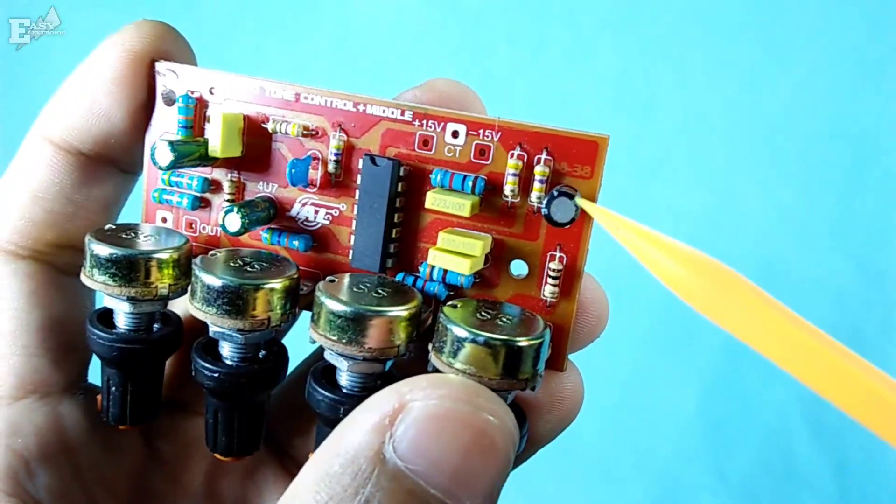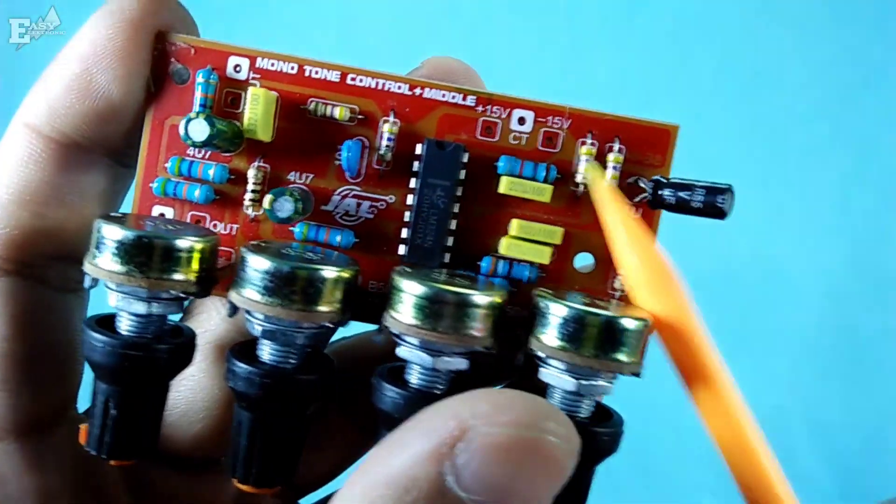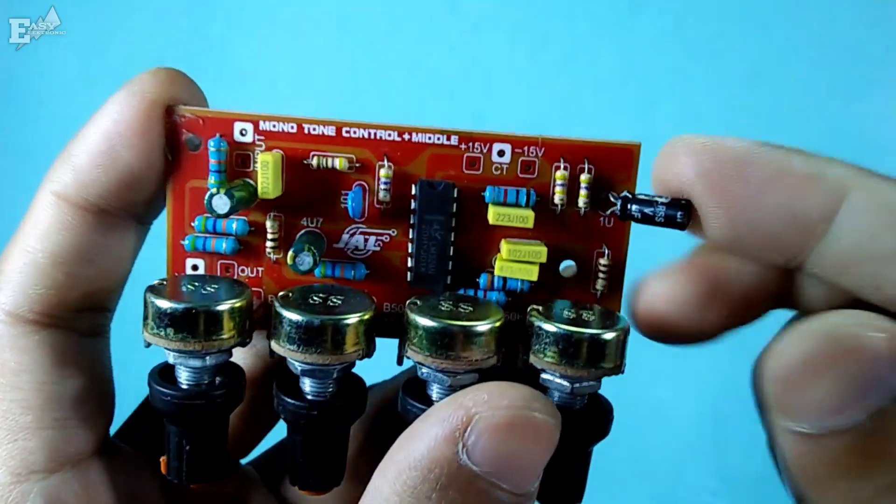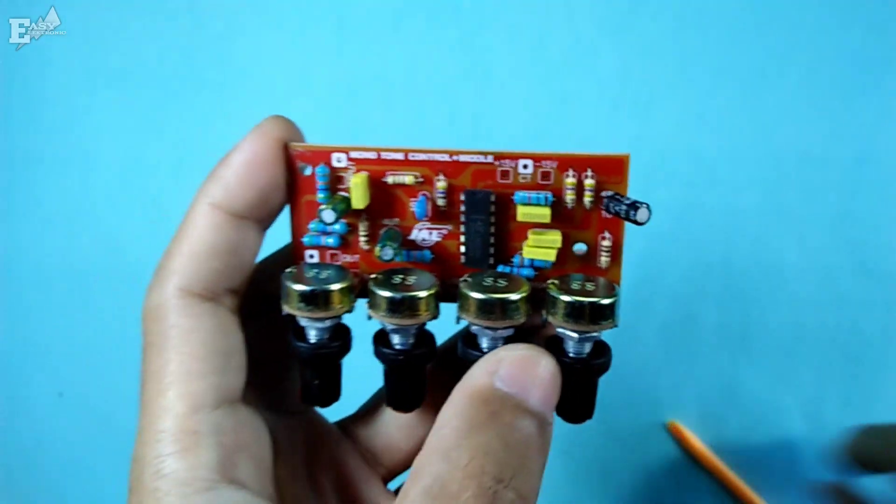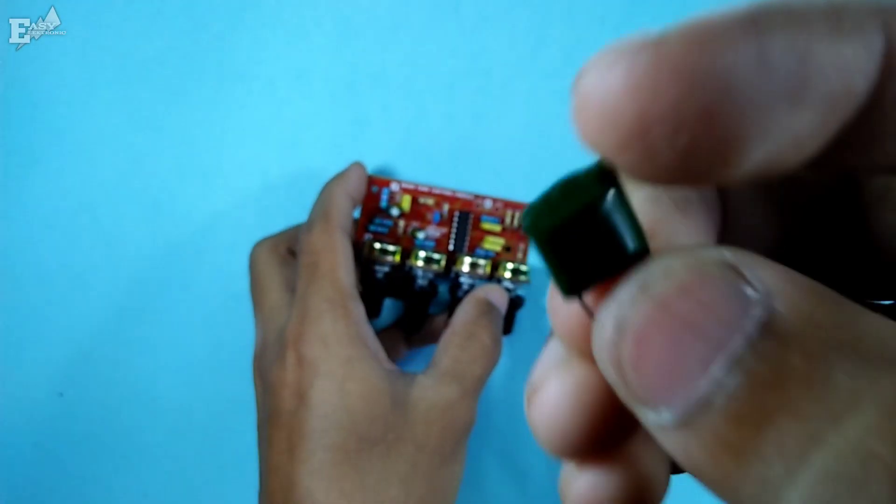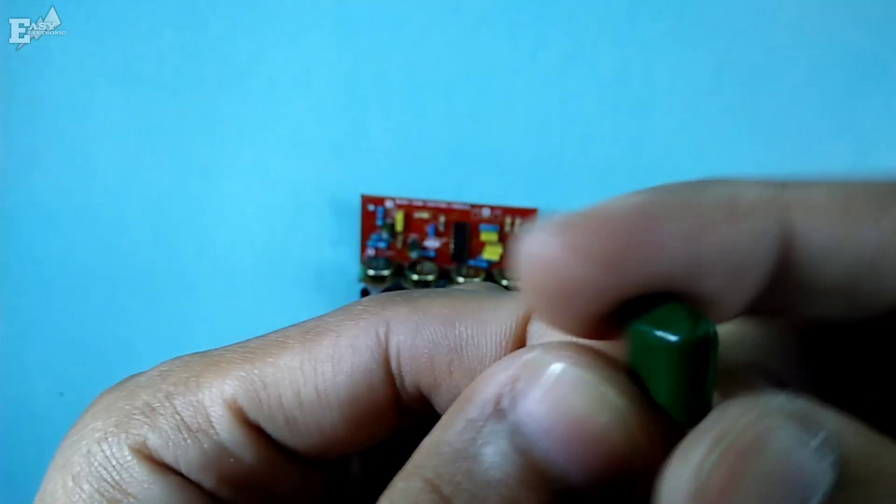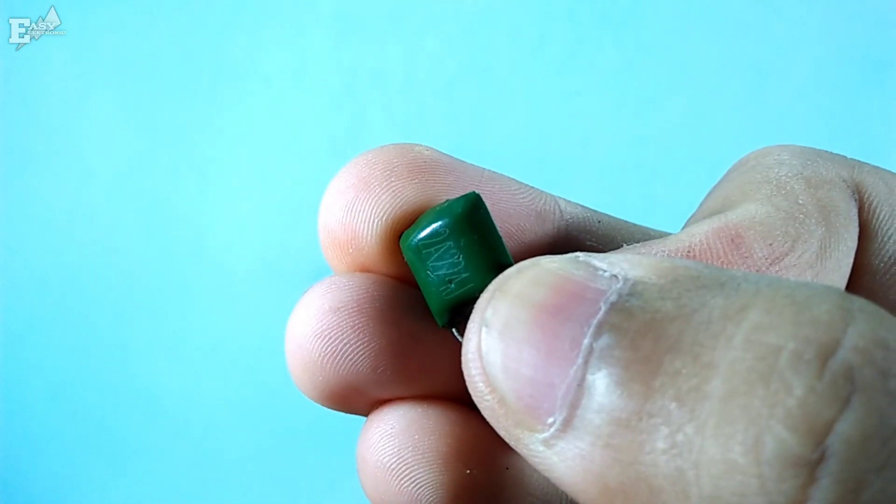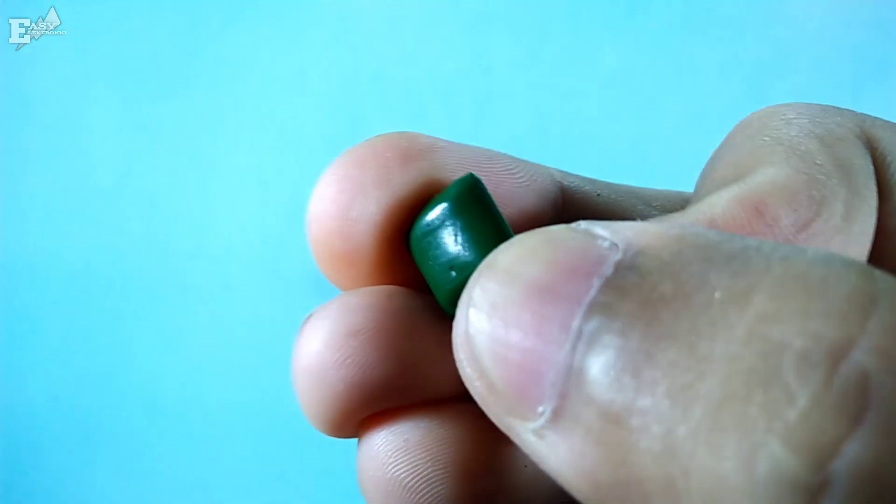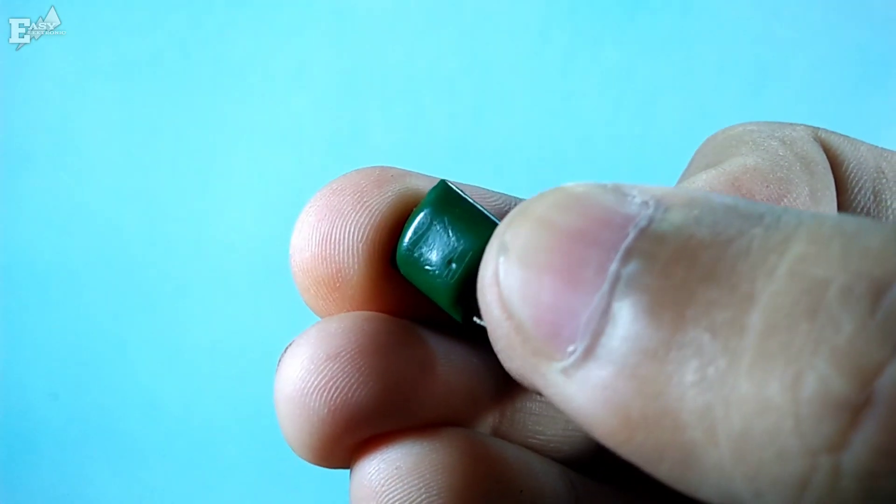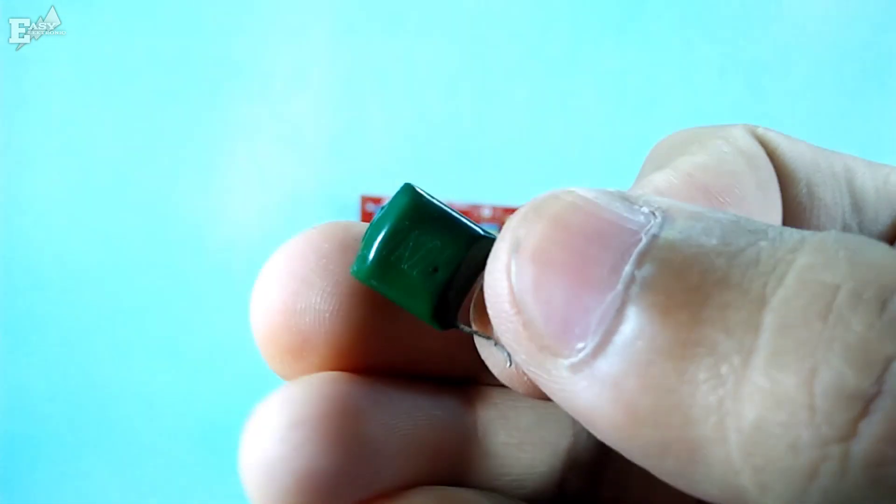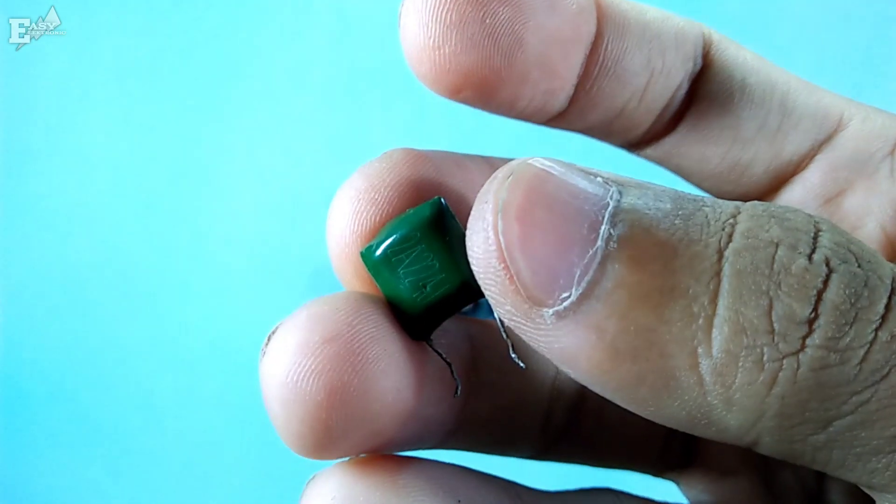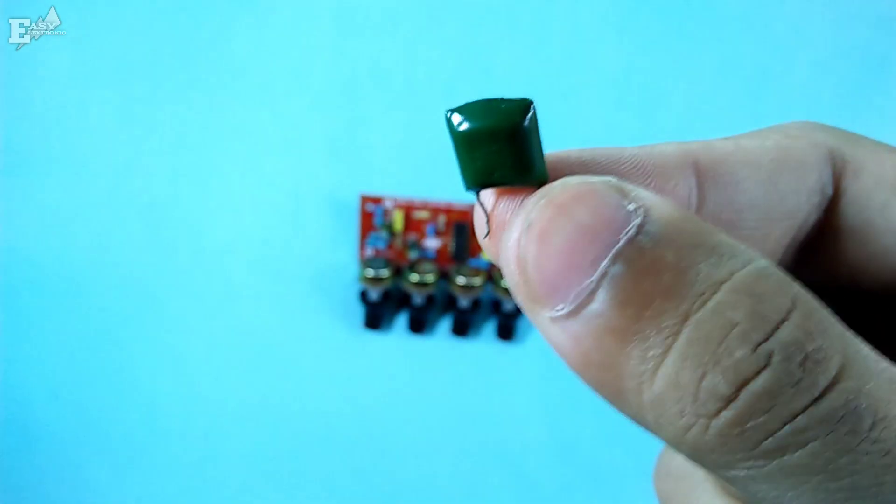Here I will only replace one component in the bass section, which is the capacitor with a value of 1 micro. I will replace it with this mylar capacitor with a value of 220 nano or code 224J. You can also use MKM or MKP for even better results.